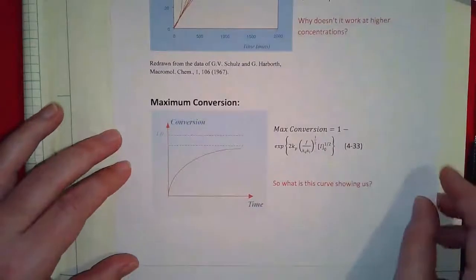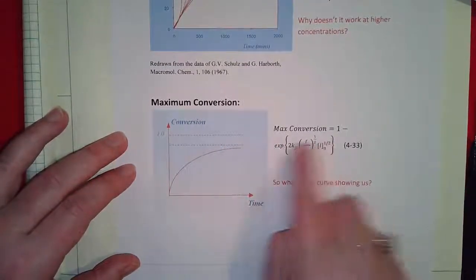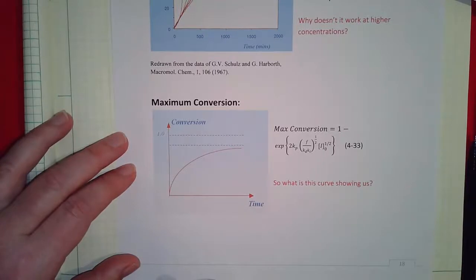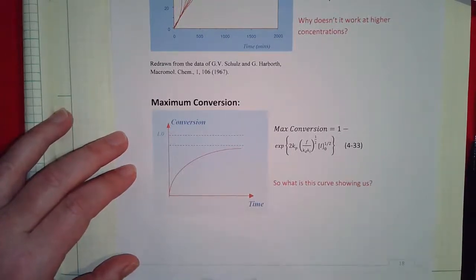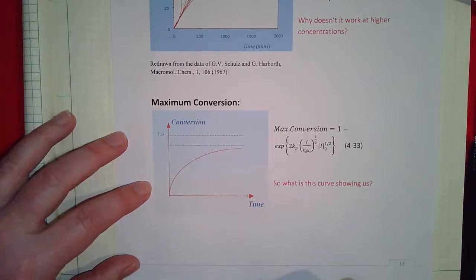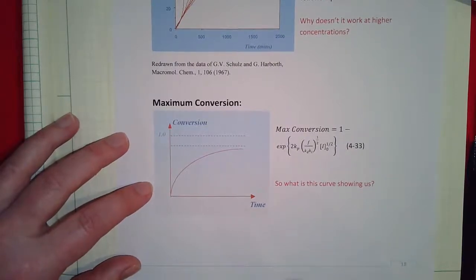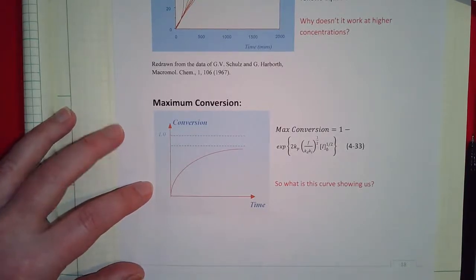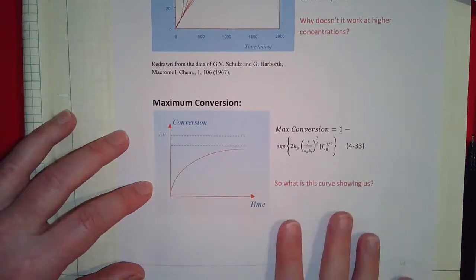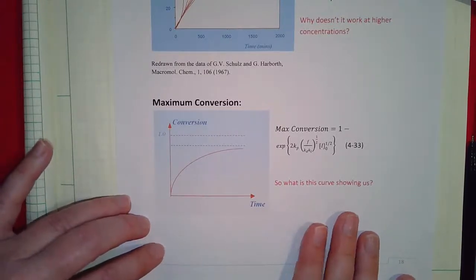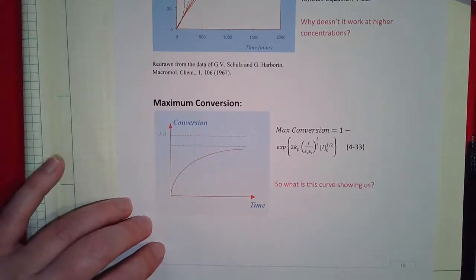The max conversion is shown here — that's the equation plotted. If we converted 100% that would be the top line, but we're down at the blue line. The main takeaway is that because we consume the initiator, we're never going to polymerize all of the monomer. We have a maximum conversion of monomer to polymer based on the consumption of the initiator. That's what these slides cover. The next and final topic will be the kinetic chain length.